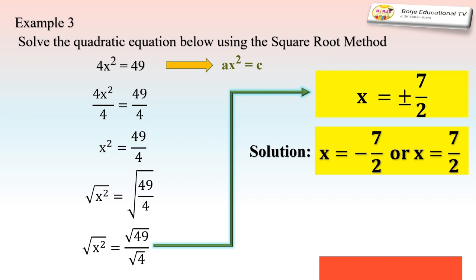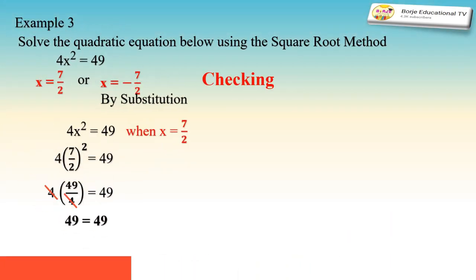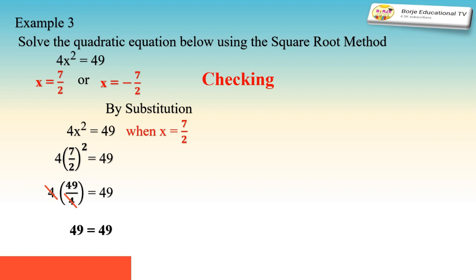Therefore the solutions of 4x² = 49 are x = 7/2 or x = -7/2. Checking by substitution with x = 7/2: we substitute into 4x² = 49, giving 4 · (7/2)² = 49. Squaring 7/2 gives 49/4; multiplying by 4 cancels the denominator, giving 49 = 49. Therefore, 7/2 satisfies the equation.